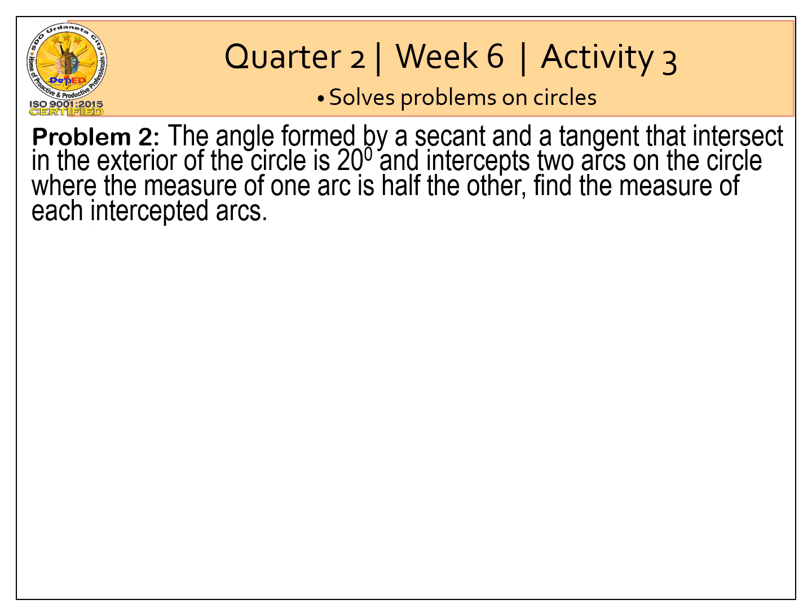Let's also have problem number 2. The angle formed by a secant and a tangent that intersect in the exterior of the circle is 20 degrees and intercepts two arcs on the circle where the measure of one arc is half the other. Find the measure of each intercepted arcs. In the figure angle C is equal to 20 degrees, so let arc LD equal to X and arc MD is equal to 1 half X.